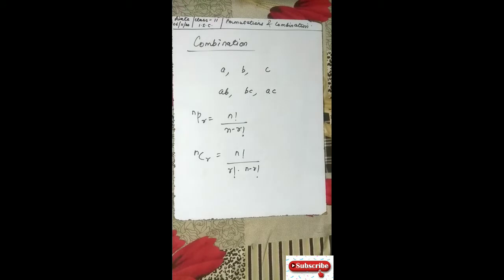As we have done in permutation — when all objects are different, when all objects are not different — we will be seeing these cases in combinations too. The very first case is when all objects are different, and we need to use the formula in front of you. Based on this formula and the applications of combinations, we will be seeing examples in this exercise.